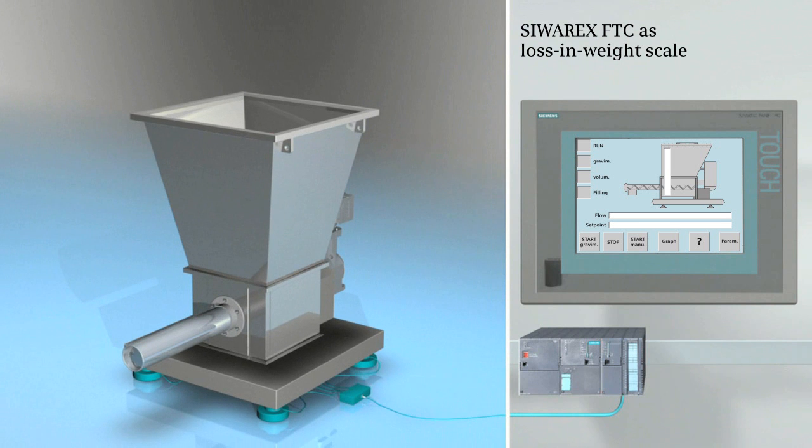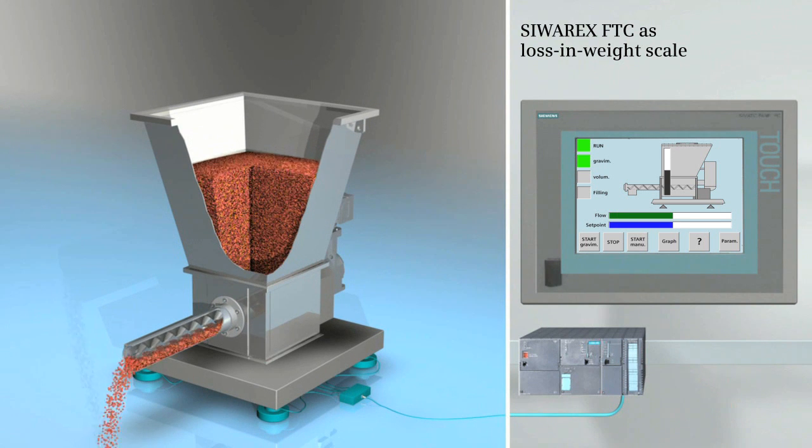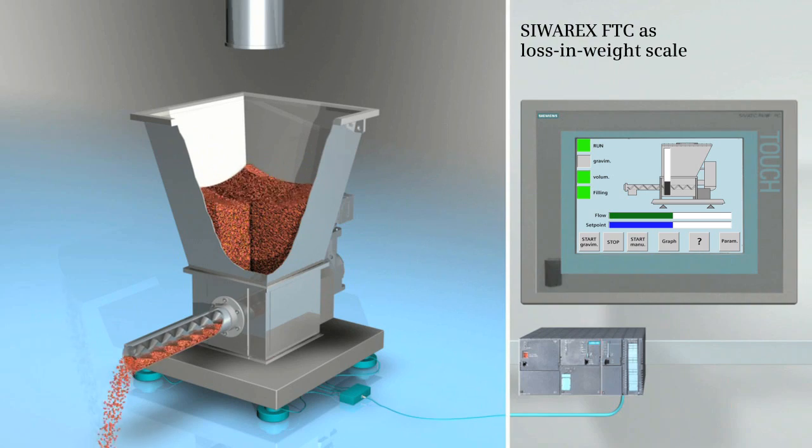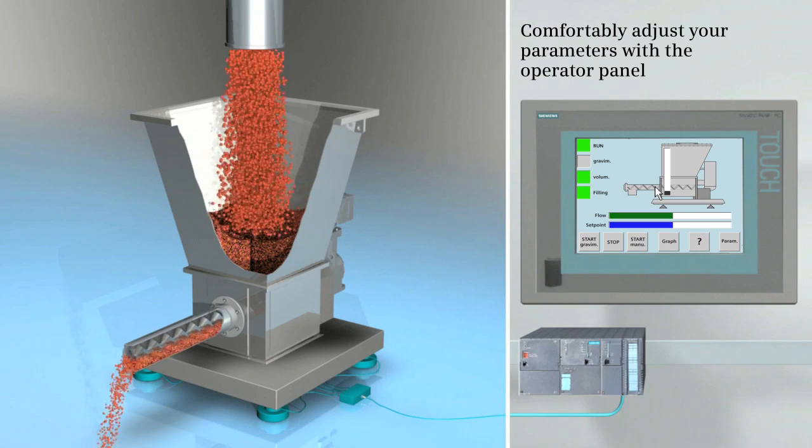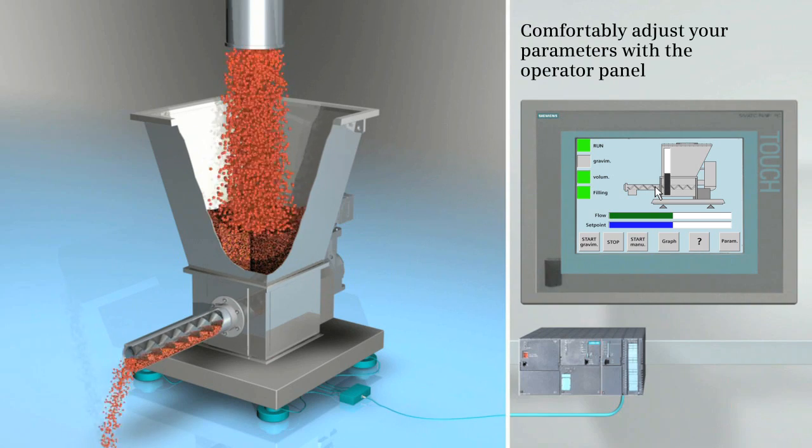One of the main areas of use for the weighing module is loss in weight feeder. All weighing specific parameters can be changed quickly and easily via the control panel.